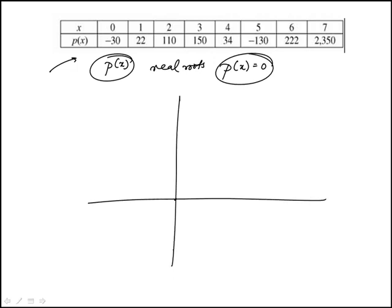When x is 0, it's minus 30 here, so just need to draw it roughly. At 1, it's 22, so somewhere here, so it kind of goes like that.